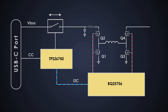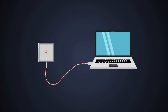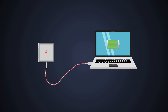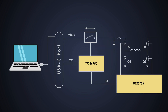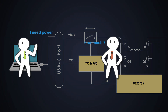Imagine plugging in a USB-C cable to your laptop. The TPS26750 chip acts like a super-smart referee that decides who gets what power and how much, making sure everything runs smoothly. Its internal USB PD controller negotiates how much power the laptop needs, talks to the charger, and decides the best power level — for example, 20 volts at 3 amperes — preventing too much or too little power from flowing.